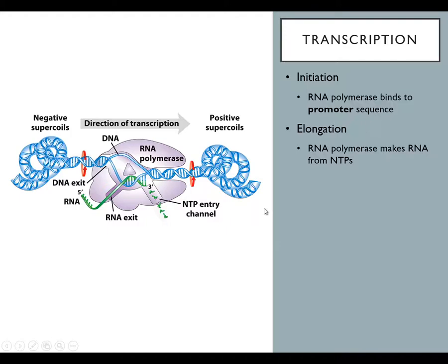Elongation is the second stage and is basically just the process of actually making the messenger RNA. Once the RNA polymerase enzyme is assembled and all transcription factors are recruited, the enzyme starts making mRNA from the template DNA strand using nucleotide triphosphates. RNA polymerase, unlike DNA polymerase, does not require a primer — it doesn't need an existing three prime end to add a base to, so it can just start from the transcription start site.